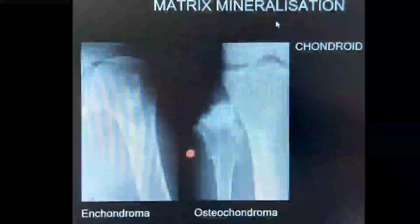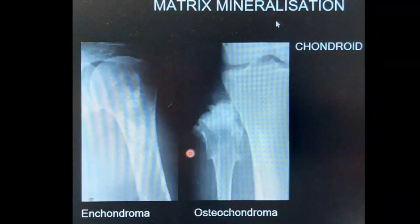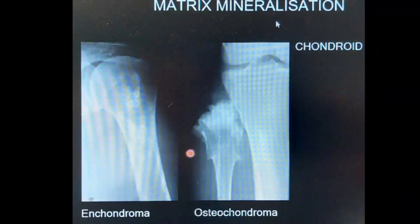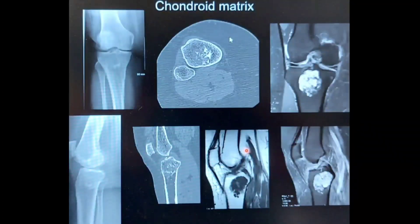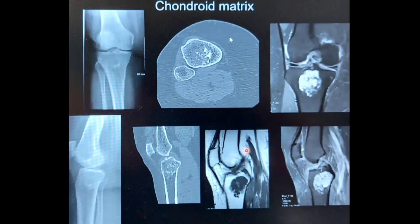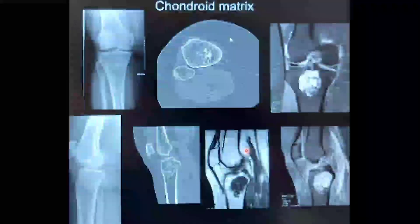On this image, matrix mineralization is demonstrated. Comparing osteochondroma and enchondroma — both have a chondroid matrix. In the lucent lesion you can appreciate specks of calcification, which may be of popcorn type, flocculent, or dot type. On CT the chondroid matrix is quite clearly visible, and on MR images it shows hyperintense signal. The matrix may appear flocculent or nodular in type.